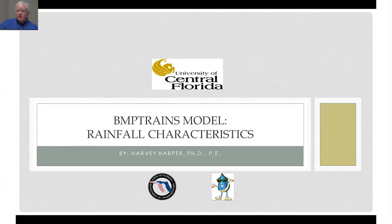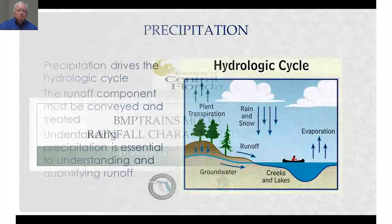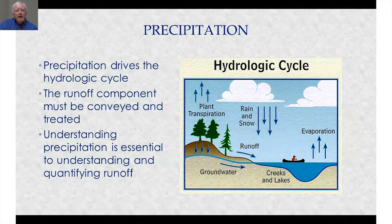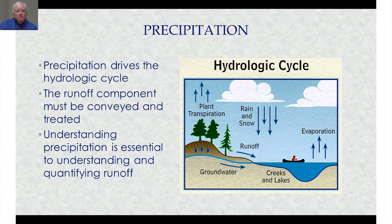If you're viewing this, you've asked for more information on rainfall characteristics used in the BMP Trains model. Precipitation is what drives the hydrologic cycle and what generates runoff. So to properly understand runoff, conveyance of runoff, and treatment of runoff, we need to understand precipitation as well.